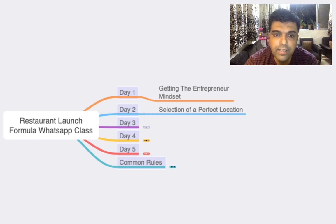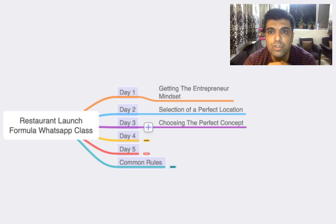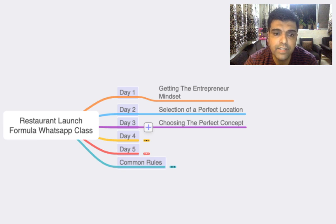Day 3 is about choosing the perfect concept. So there are so many concepts in a restaurant - there is fast food, there is takeaway. There are more than around 10 to 15 concepts which I have gone in depth and explain to you in detail, and these will be available to you in the video on day 3.